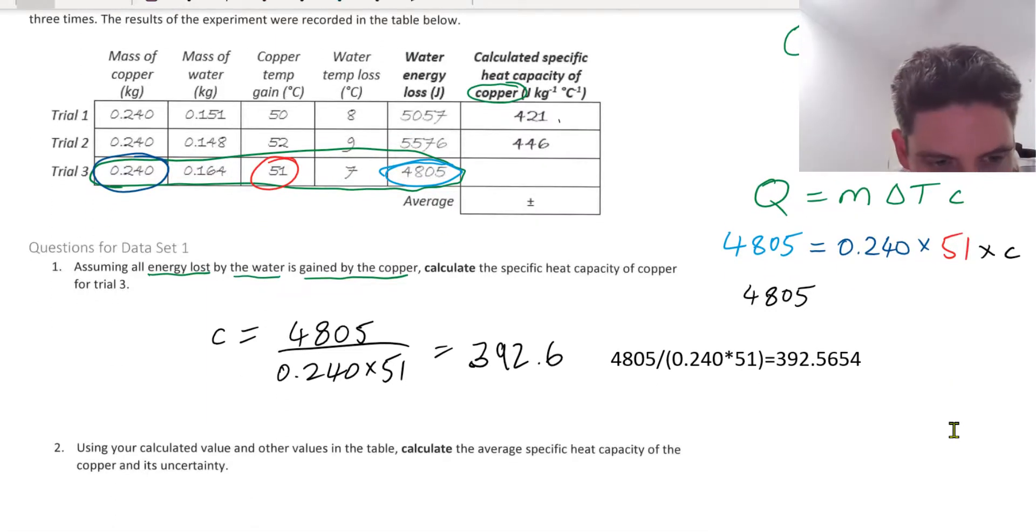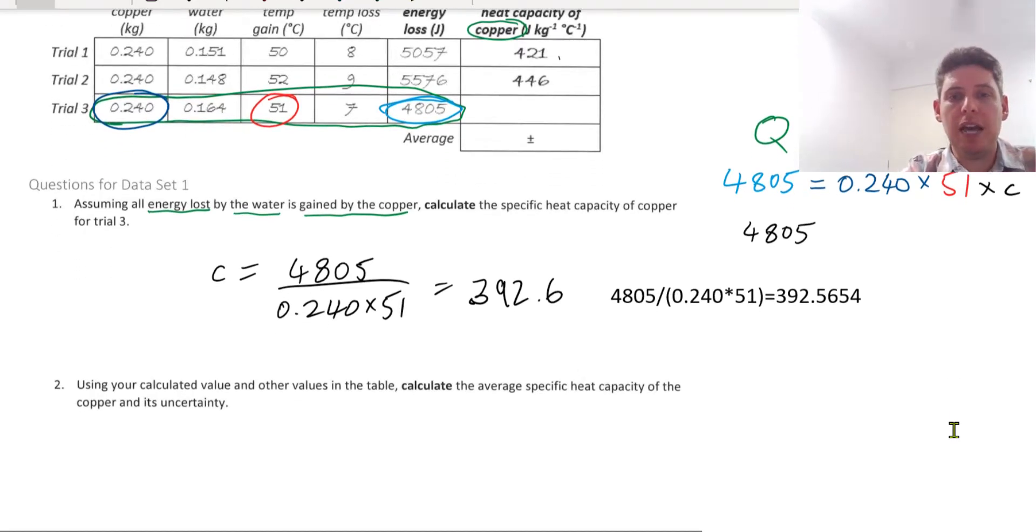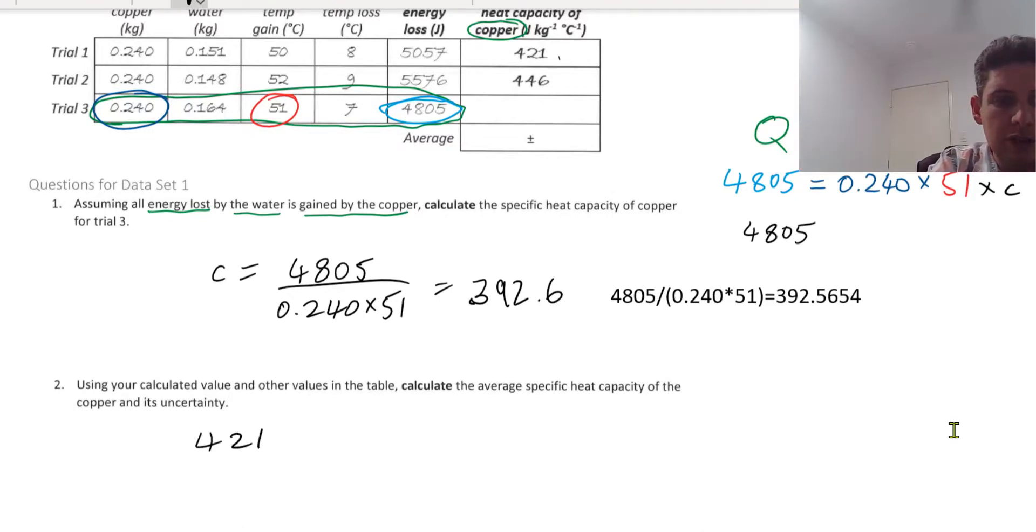Alright, let's have a go at question 2. Using your calculated value and other values in the table, calculate the average specific heat capacity of the copper and its uncertainty. So average is pretty simple. Add those three together of the three trials divided by the number of trials, which is 3.